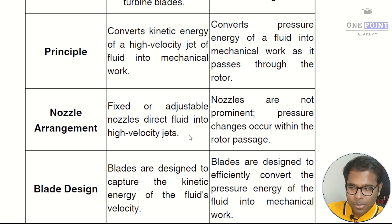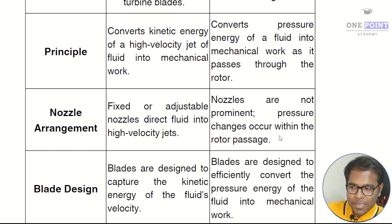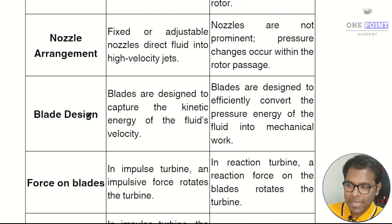In a reaction turbine, nozzles are not prominent — they are not used; instead pressure changes occur within the rotor passage itself. The next difference is based on blade design: blades are designed to capture the kinetic energy of the fluid's velocity in an impulse turbine.